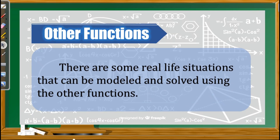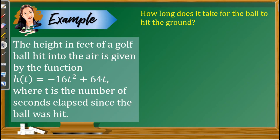There are other real life situations that can be modeled using functions. Example: The height in feet of a golf ball hit into the air is given by h(t) = −16t² + 64t, where t is the number of seconds elapsed since the ball was hit. The question is: how long does it take for the ball to hit the ground? We let t be unknown. For the ball to hit the ground, the height is zero, so we let h(t) = 0.